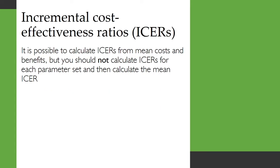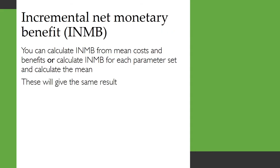When it comes to incremental cost-effectiveness ratios, or ICERs, it is possible to calculate ICERs from the mean costs and benefits, but you should not calculate ICERs for each parameter set and then calculate the mean ICER from them. With incremental net monetary benefit, you can calculate that from the mean costs and benefits, or calculate the incremental net monetary benefit for each parameter set and then calculate the mean across them. These will give the same results, unlike for ICERs.